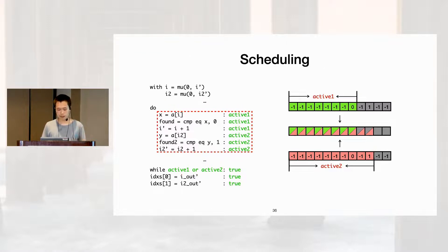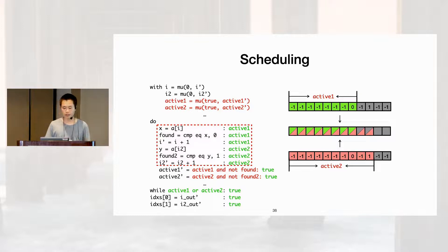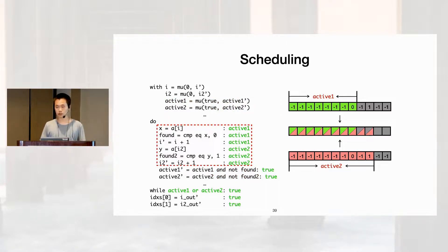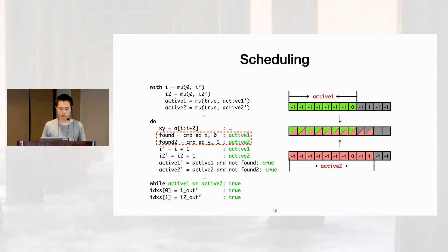The active flags are computed recursively with mu nodes, both initialized to true since both loops execute their first iterations unconditionally. The recursive definition says a loop is only active in the next iteration if it is currently active and its continue predicate returns true. At this point we have a single loop that correctly executes both original loop bodies together even with different trip counts. We then recursively schedule any nested instructions or loops, after which isomorphic instructions are grouped and packed into equivalent vector instructions — for example, a pair of scalar loads becomes a single vector load.